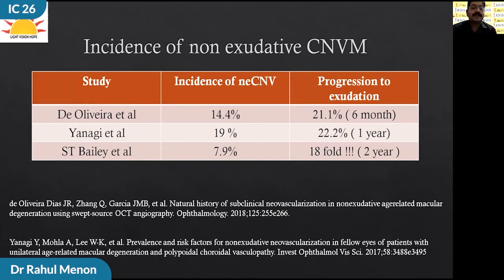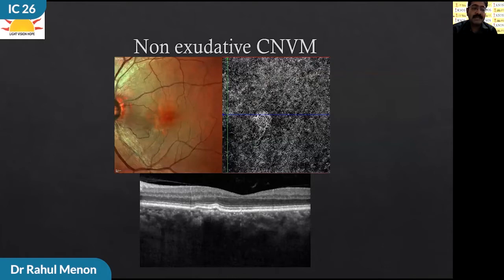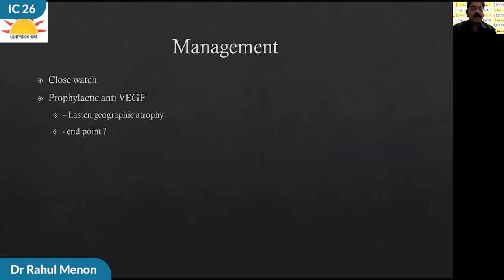De Oliveira and group found the incidence of non-exudative CNVM in the fellow eyes of exudative CNVM patients to be 14.4%, of which 21.1% progressed to exudation over six months. Yanagi and group found the incidence to be 19% and the progression rate to exudation was 22.2%. Balaratnasingam and group found the incidence to be around 8%, with an 18-fold chance of exudation developing. OCTA is not always needed — the composite multicolor image can also detect non-exudative CNVM as a network of bright orange color. The only option is to keep close watch, as prophylactic anti-VEGF therapy may be counterproductive, hastening geographic atrophy and making a clinical endpoint very difficult to attain. Thank you.